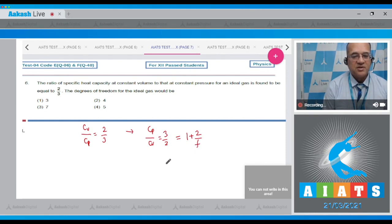So 3/2 minus 1 is equal to 2/f, and we can find from here that 1/2 is equal to 2/f, or f is equal to 4.